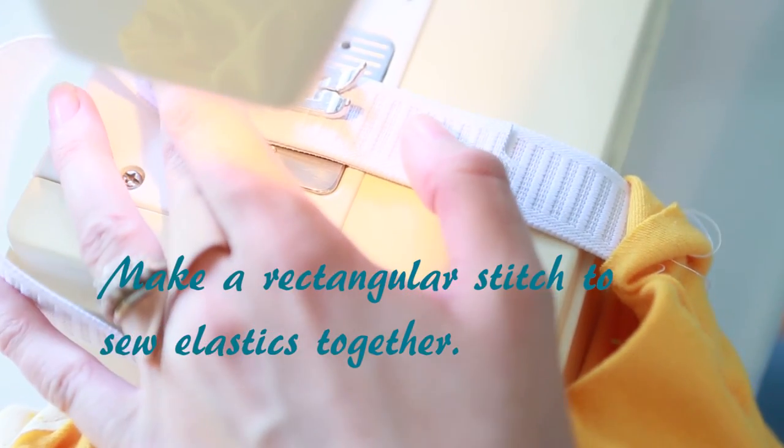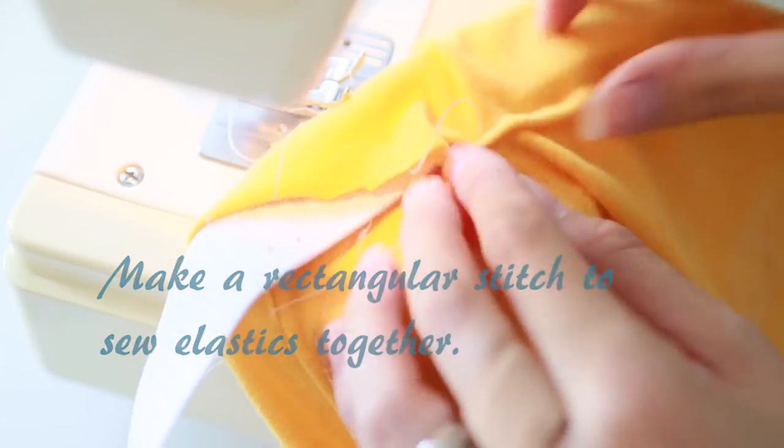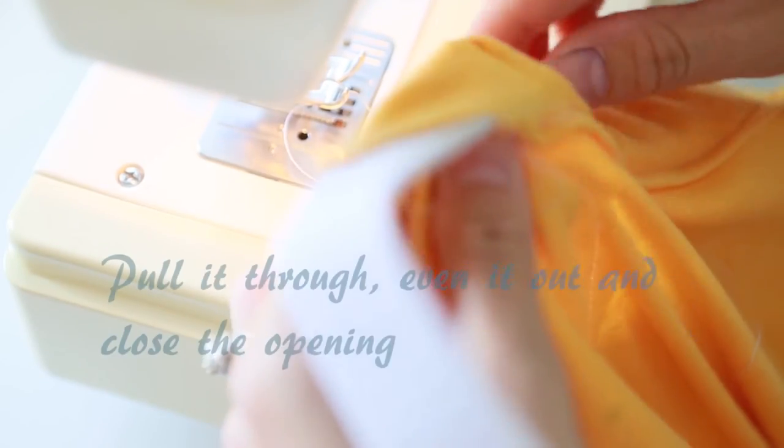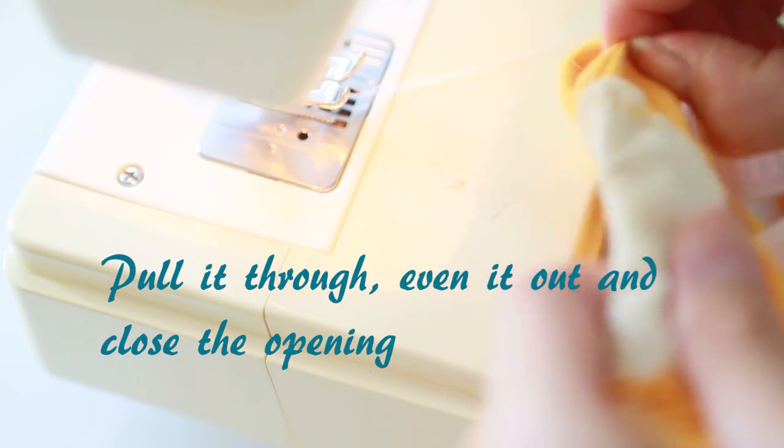Make sure to leave a 6 inch gap at the end so that you can access your elastic. And then once you've done that, you're going to close your elastic together, sew it together. I just did a rectangular shape around there. And then go ahead and stretch the elastic all through. This is why it's important not to sew the elastic to the fabric.